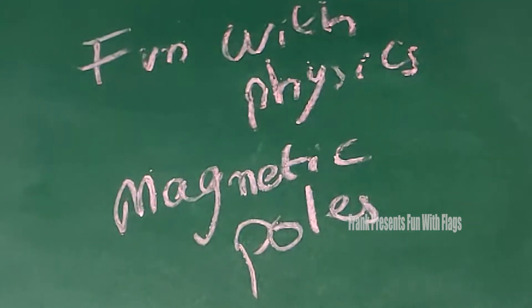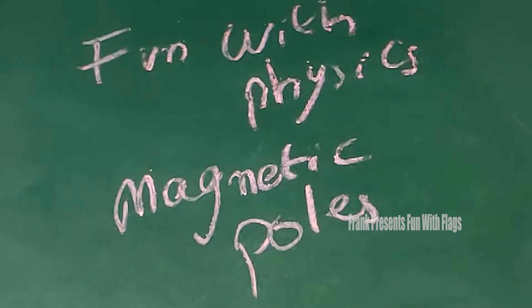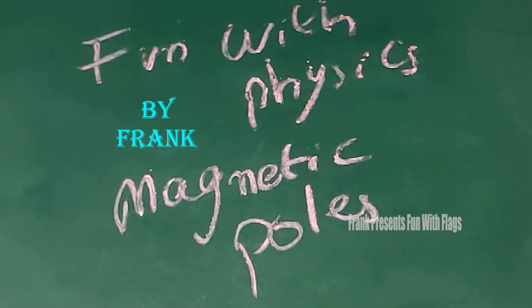Magnetic lines of force move from the magnetic north pole towards the magnetic south pole outside the magnet, and from the south pole towards the north pole inside the magnet.